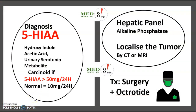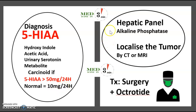How to make the diagnosis? To make the diagnosis, we use urinary serotonin metabolite, which is 5-hydroxyindoleacetic acid (5-HIAA). Carcinoid is confirmed if 5-HIAA is over 50 milligrams per 24 hours. Normal is 10 milligrams per 24 hours. Of course, we also use a hepatic panel including alkaline phosphatase, and we have to localize the tumor by CT scan or MRI.